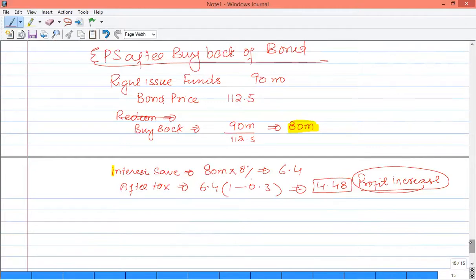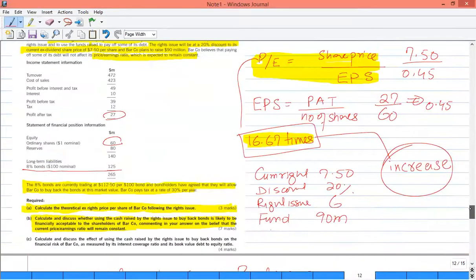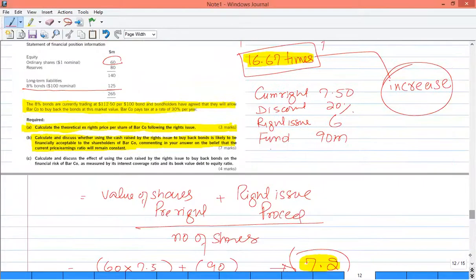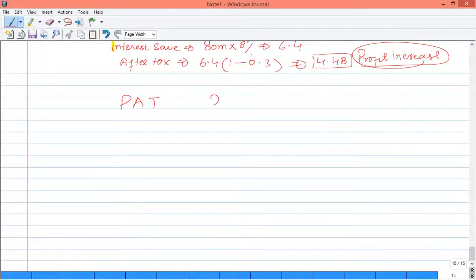So the interest saving will not be full of 6.4 because the interest saving will decrease by tax. 4.48. When interest increases, the tax saving will decrease, and when interest decreases, the tax saving will decrease. So now our interest saving is 4.48. Our existing profit after tax is 27 million. In this 27 million, how much will the incremental effect come? 4.48. So this is 31.48.